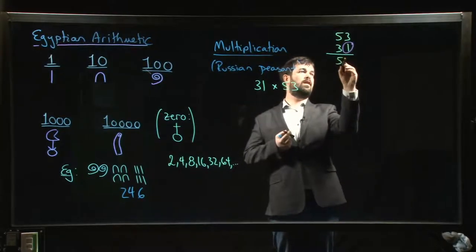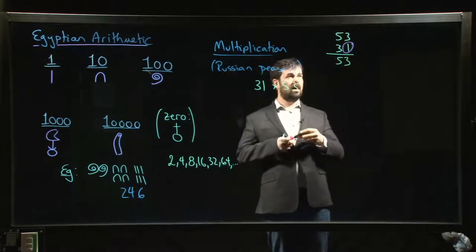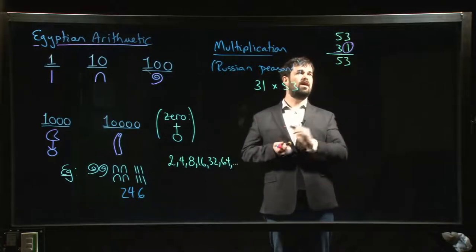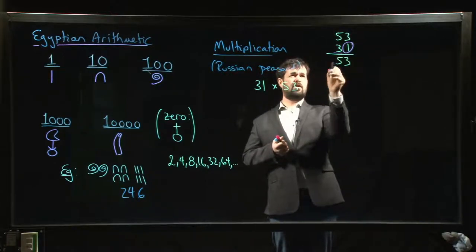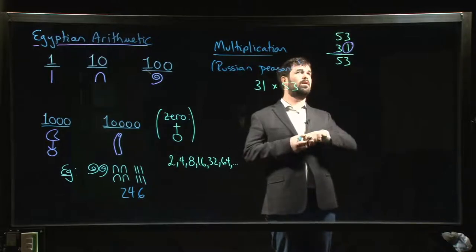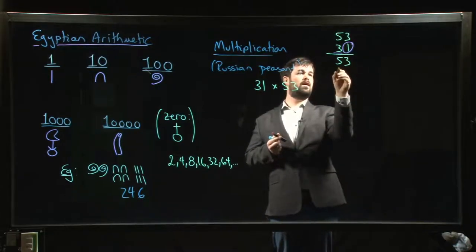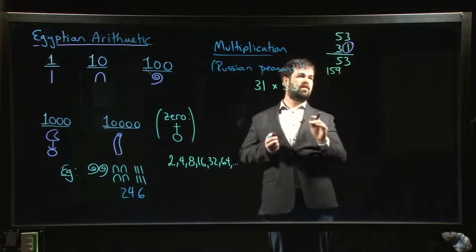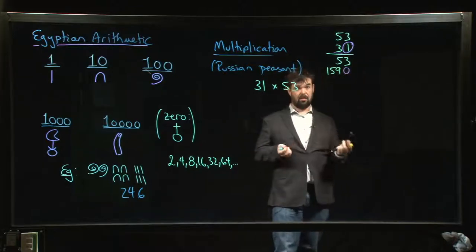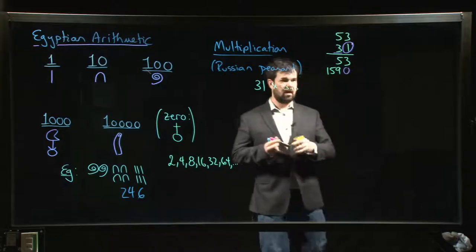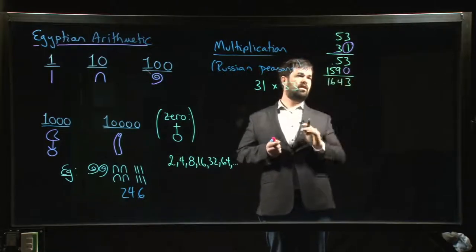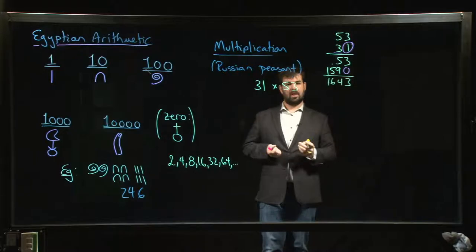You would start with the one and do 1 times 53, and you'd write that down. Then you would move over and get to this three, and you'd say, okay, now I'm going to do 3 times 53. But you would shift that over one because really what you're doing is 30 times 53. So 3 times 3 gives you 9, 3 times 5 is 15, so 159. Really what this is is 1590 because you're really multiplying by 30, not just 1.